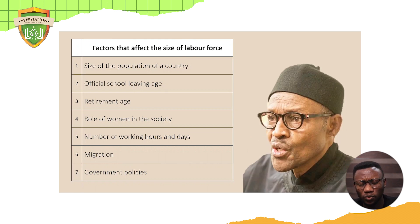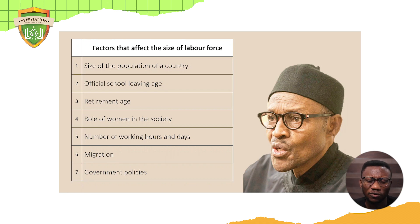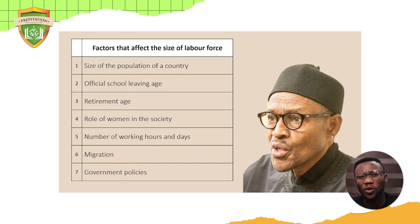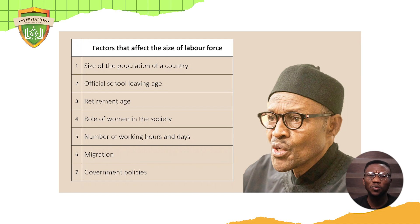The actions of government also matter. Government policies determine the number of people that are working. If the government raises the retirement age, more people would work. If the government changes the education system — say, reducing university from four years to three years — it gives more people a chance to work sooner. If the government scraps NYSC, for example, more people can start working immediately after university without spending that extra year.